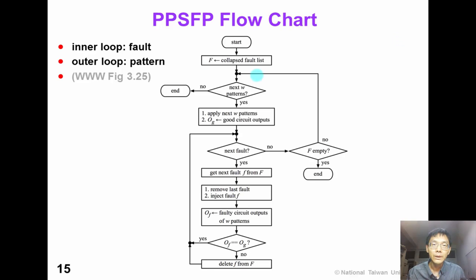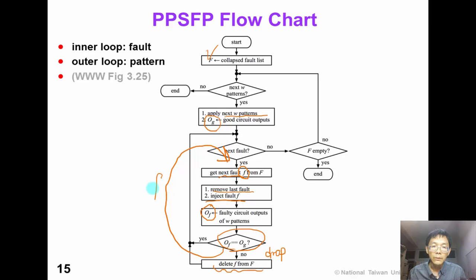Here is the PPSFP flowchart. Initially, F is the collapsed fault list. We apply W patterns in parallel and obtain the good output OG. Then we get the next fault F from the fault list, remove the effect of the last fault, and inject the new fault. We obtain the faulty circuit output OF and compare OF and OG. If they are the same, fault F is not detected. If not, the fault is detected and we remove it from the fault list — this is called fault dropping. The inner loop is a loop over faults and the outer loop is a loop over patterns.